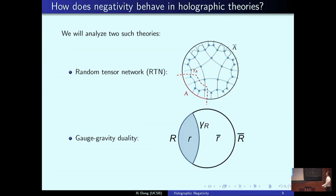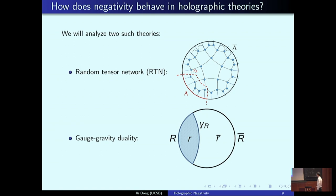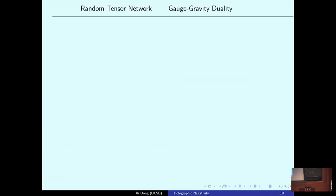We will study negativity broadly in two kinds of models. One is a toy version of holography in terms of random tensor networks. The second is an honest AdS/CFT-type theory where we can derive various things using gravitational path integrals. Before going into details, I want to give a table of results.